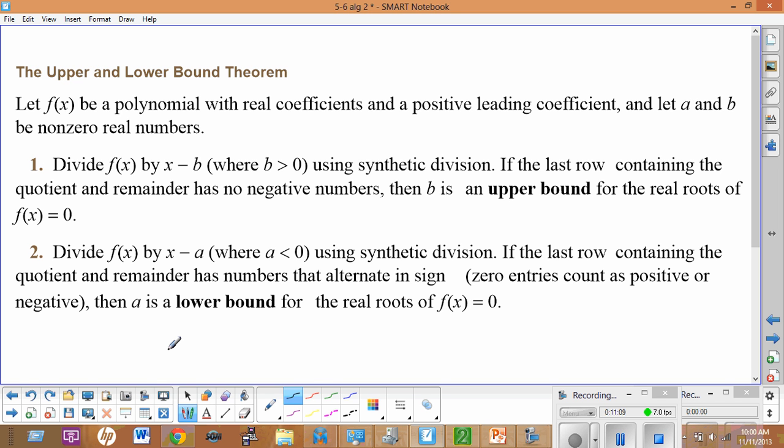Number 1: Divide f(x) by x minus b where b is greater than 0. So all we're saying here is this is our zero and he is positive. Using synthetic division, if the last row containing the quotient and the remainder has no negative numbers, then b is an upper bound for the real roots of f(x) equals 0. So no zero is bigger than b.